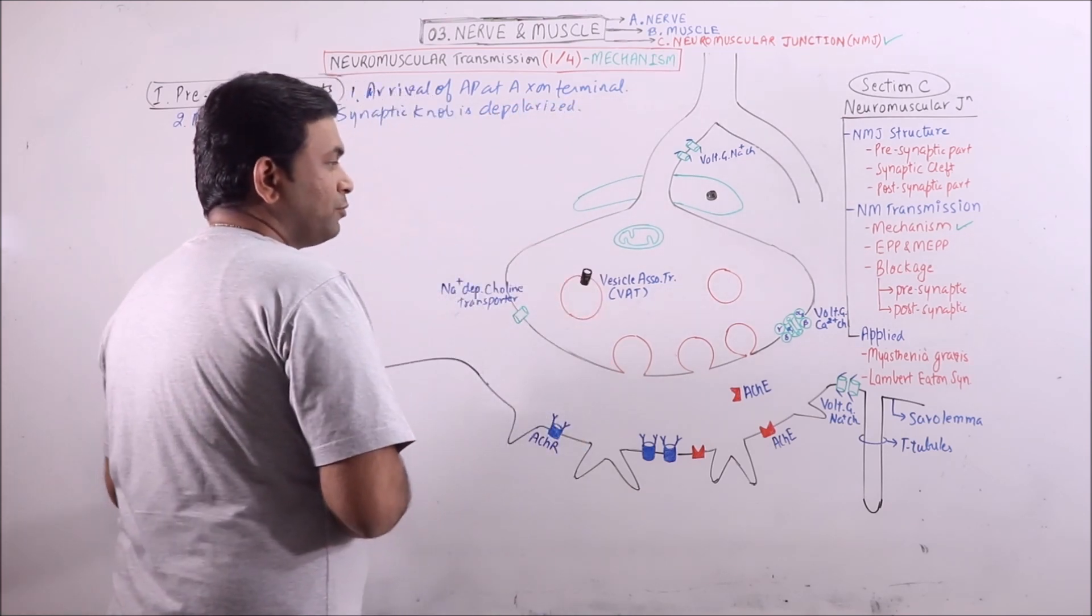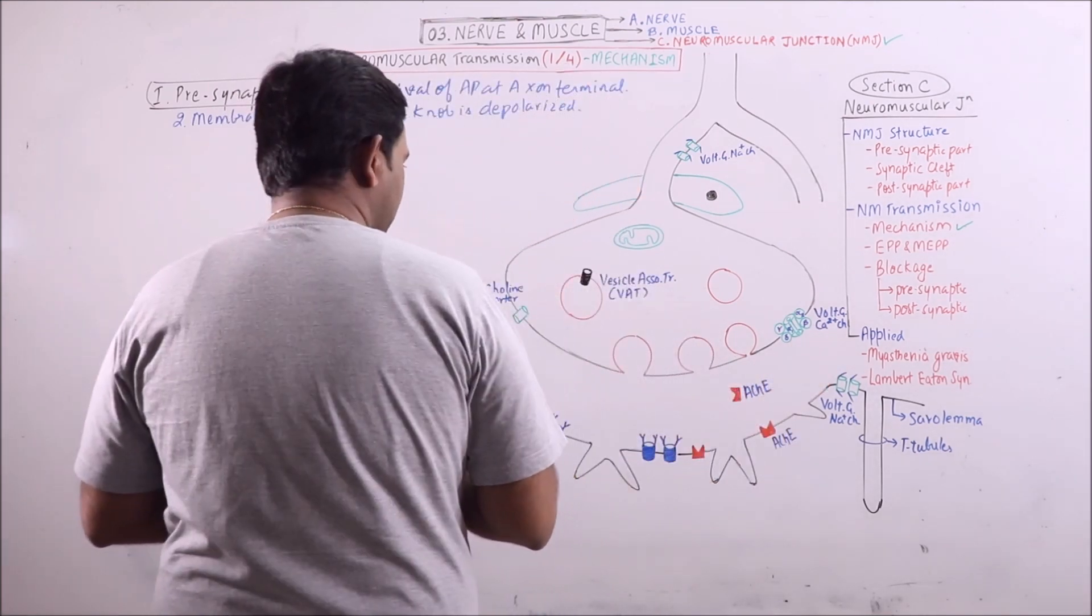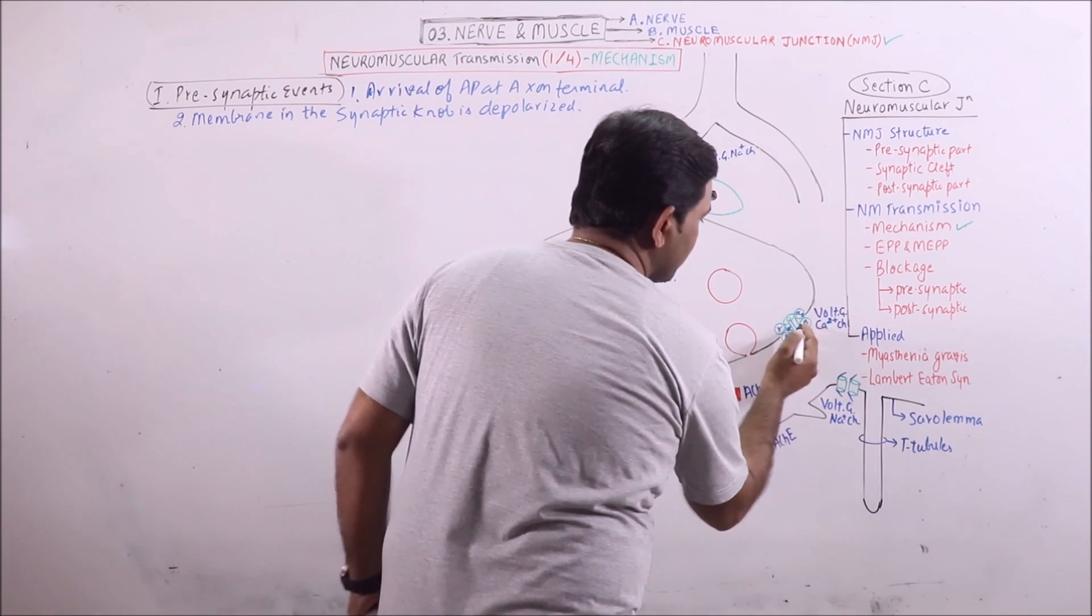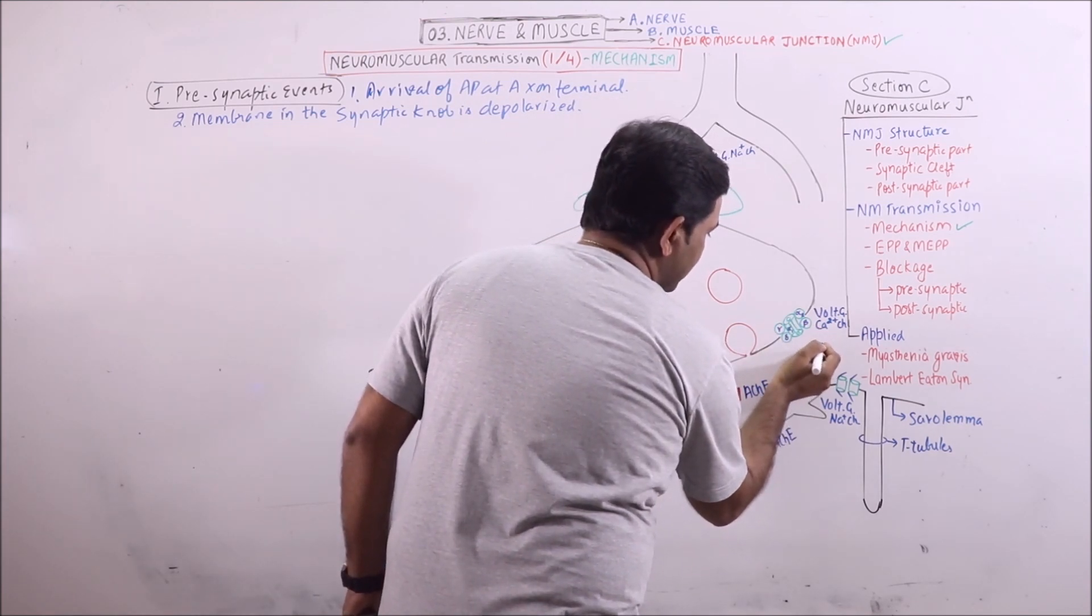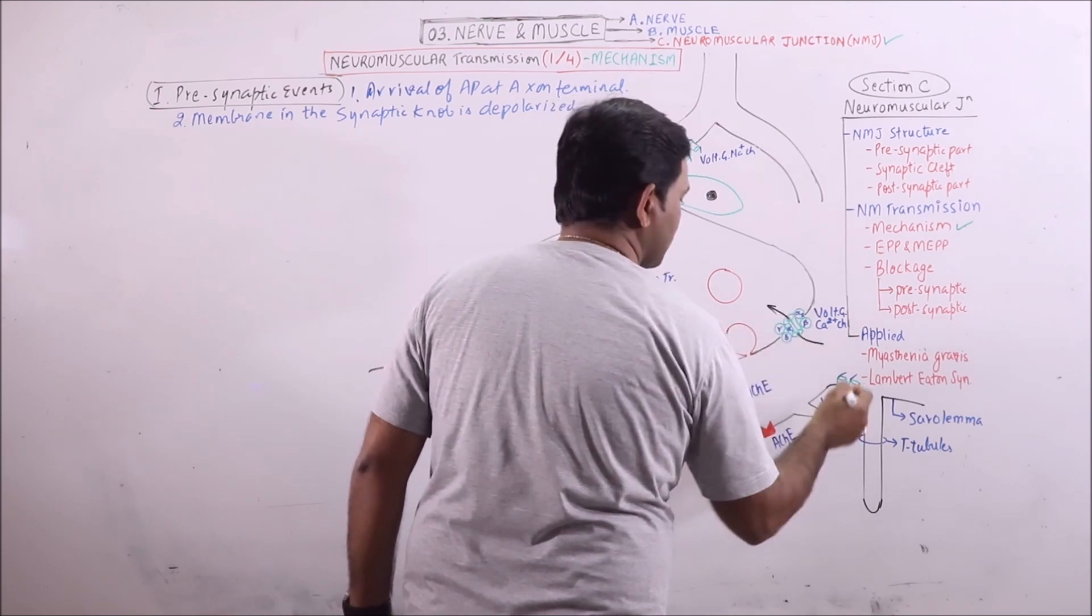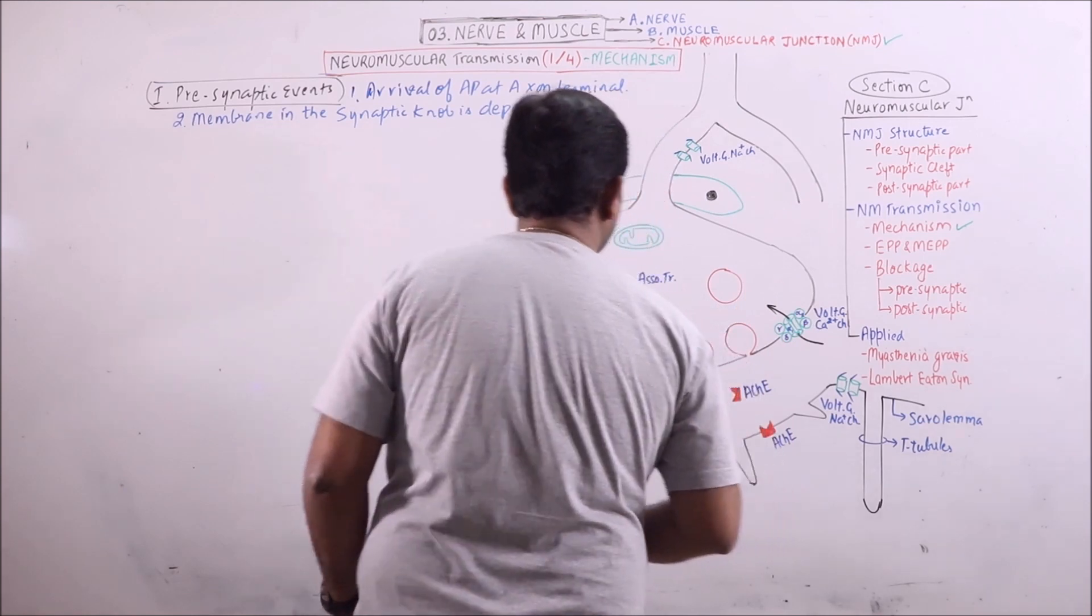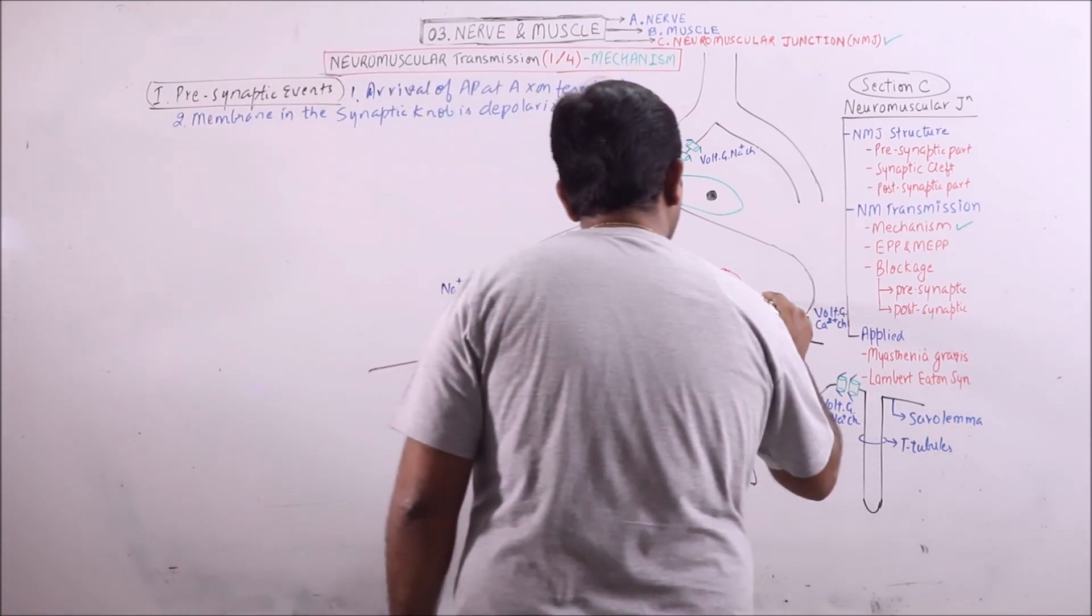When the membrane is depolarized, voltage gated calcium channels are activated, which results in calcium moving from the synaptic cleft into the axon terminal.